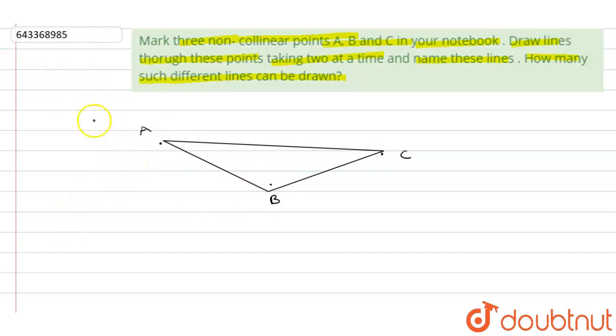So the maximum number of lines which we can draw using these three points is three. The names of these lines will be AB, BC, and AC.